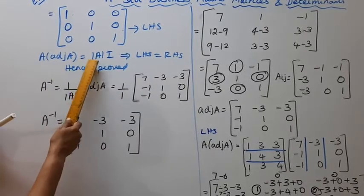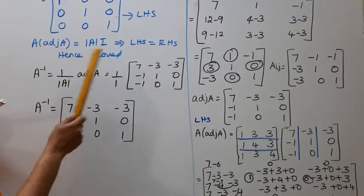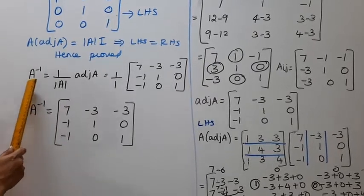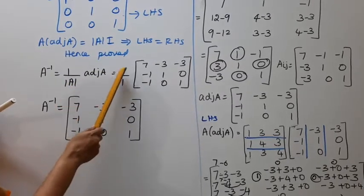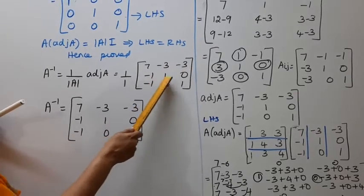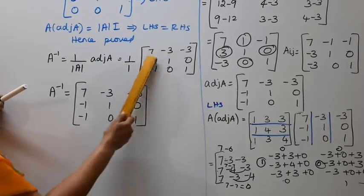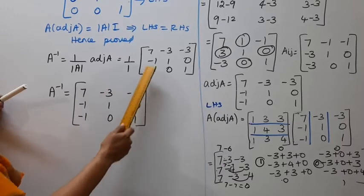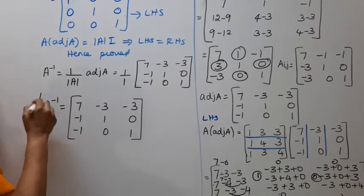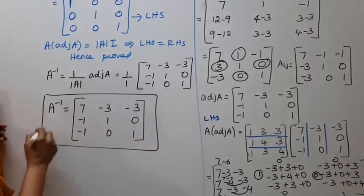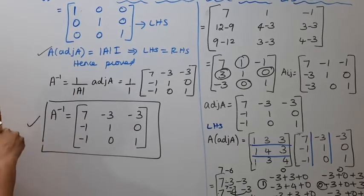Therefore A into adjoint A equals determinant A into I, so left hand side equals right hand side — hence proved. Also, A inverse equals 1 by determinant A into adjoint A equals 1 by 1 into adjoint A. So A inverse equals [7,minus 3,minus 3; minus 1,1,0; minus 1,0,1].